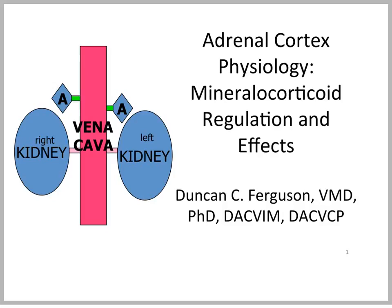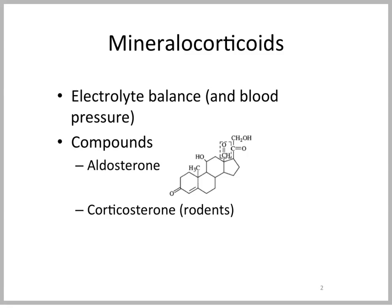Hi, this is Duncan Ferguson. In this unit we're going to talk about mineralocorticoids, both how they're regulated and also their effects. As we talked about in an earlier unit, we have basically the compounds aldosterone, seen in most of our domestic species, and occasionally corticosterone as mineralocorticoids in rodents. Their main role is electrolyte balance and blood pressure secondarily.